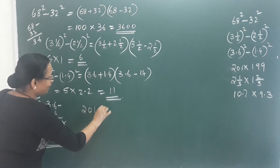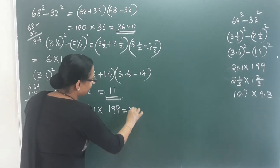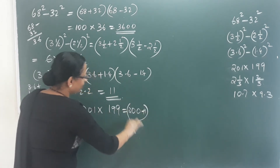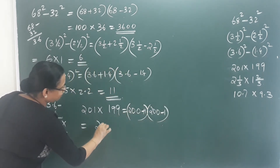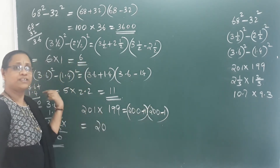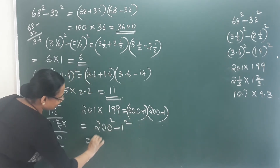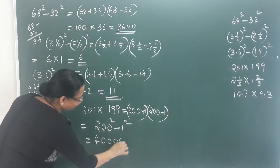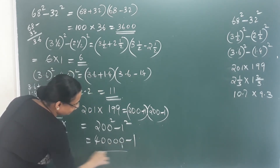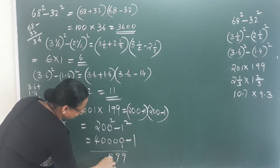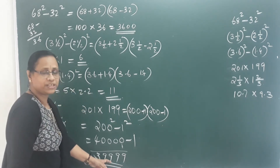Next: 1 into 199, which is 200 plus 1 into 200 minus 1. Using a square minus b square: 200 squared minus 1 squared. That is 2 into 2 equals 4, so 40,000 minus 1. The digits are 3, 9, 9, 9, 9 — the answer is 39,999.